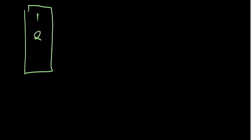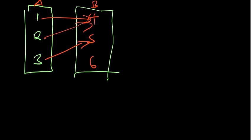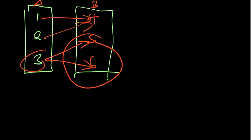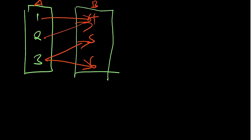Let's also look at the many-to-many case. If we have {1, 2, 3} in set A mapping to {4, 5, 6} in set B, where one element of A maps to two elements of B, and two elements of A map to one element of B — this is many-to-many, and it is not a function because one element of A is giving two different elements of Y, which is not allowed.